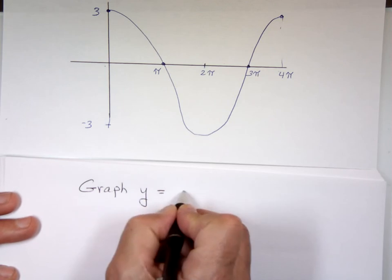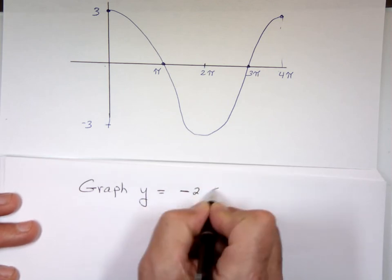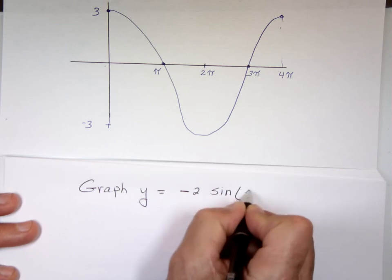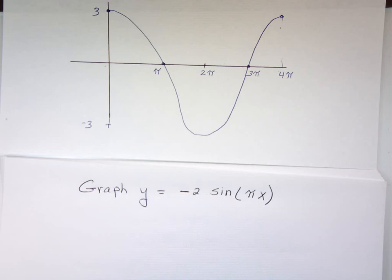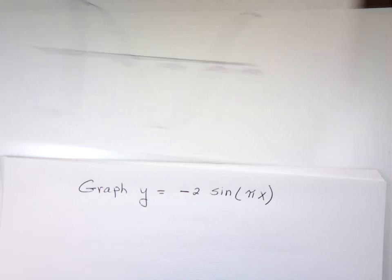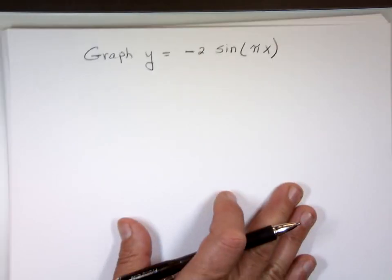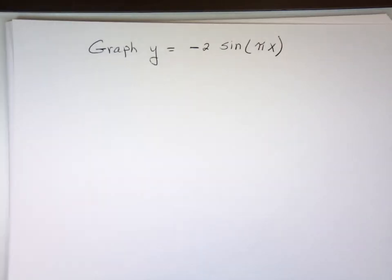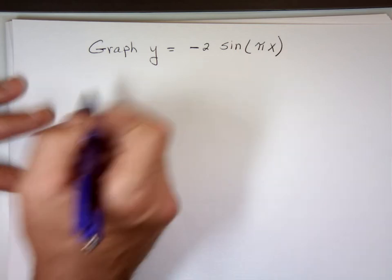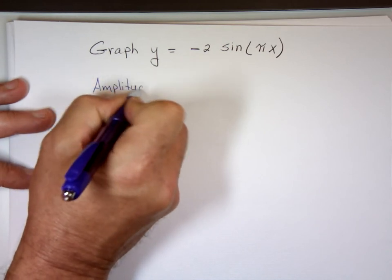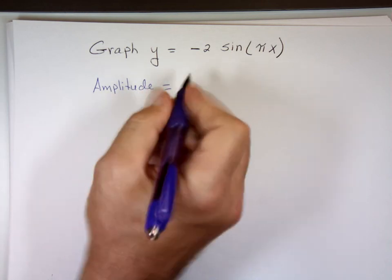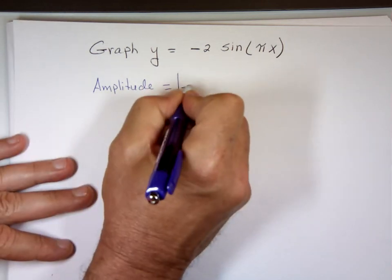Let's try negative 2 sine pi x. Again, my amplitude is the absolute value of negative 2, which is 2.